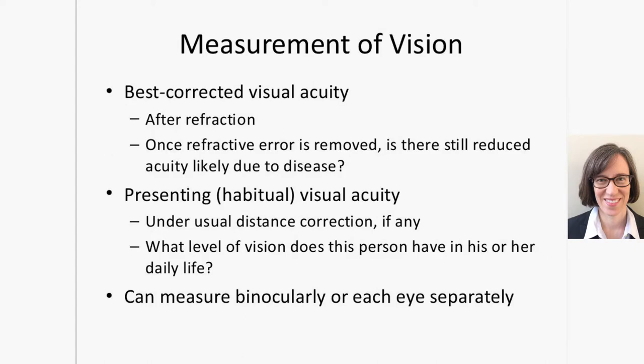There are different ways visual acuity can be measured. You can measure best corrected visual acuity, removing the effect of refractive error — so any additional reduced acuity is due to eye disease. You can also measure someone's visual acuity with the glasses they're currently wearing, which tells you what vision that person has in their daily life. Furthermore, you can measure acuity under binocular conditions — with both eyes open — or monocularly, one eye at a time.